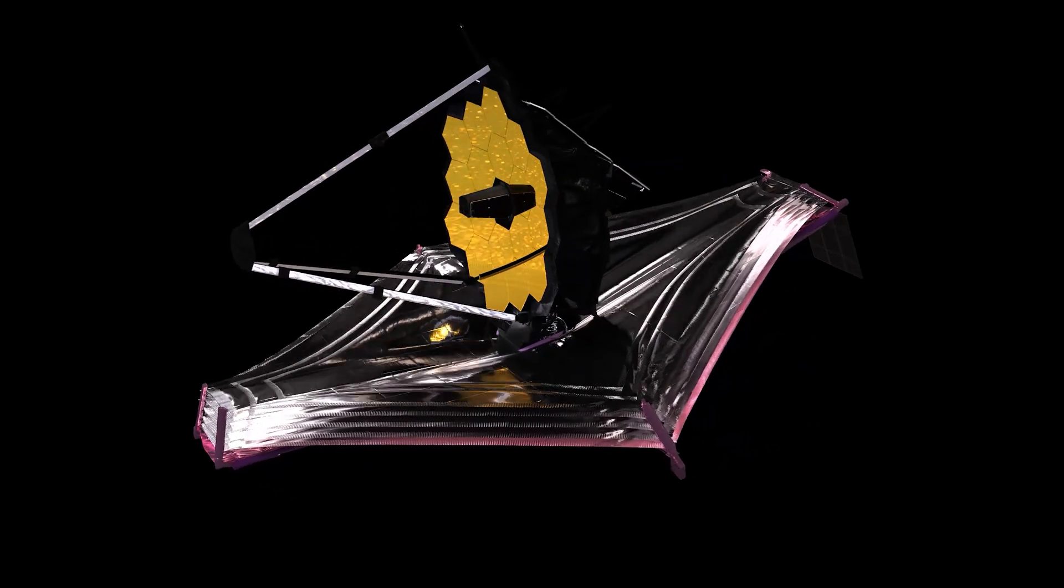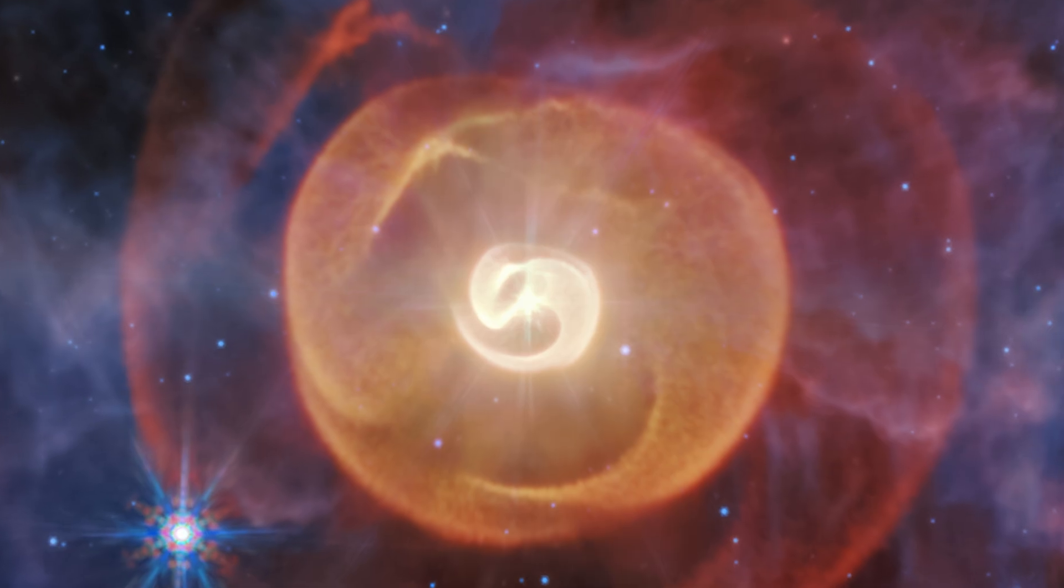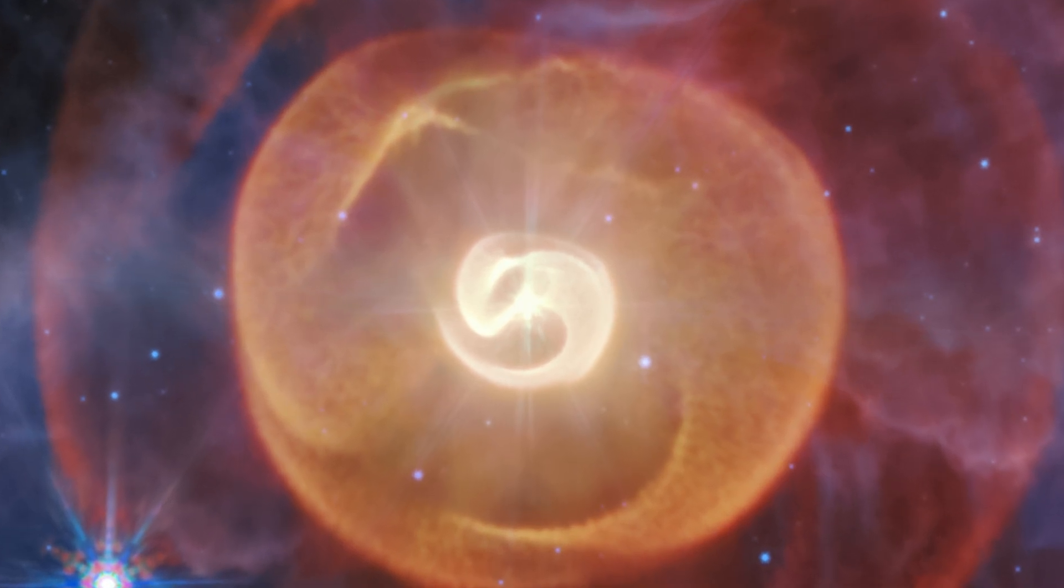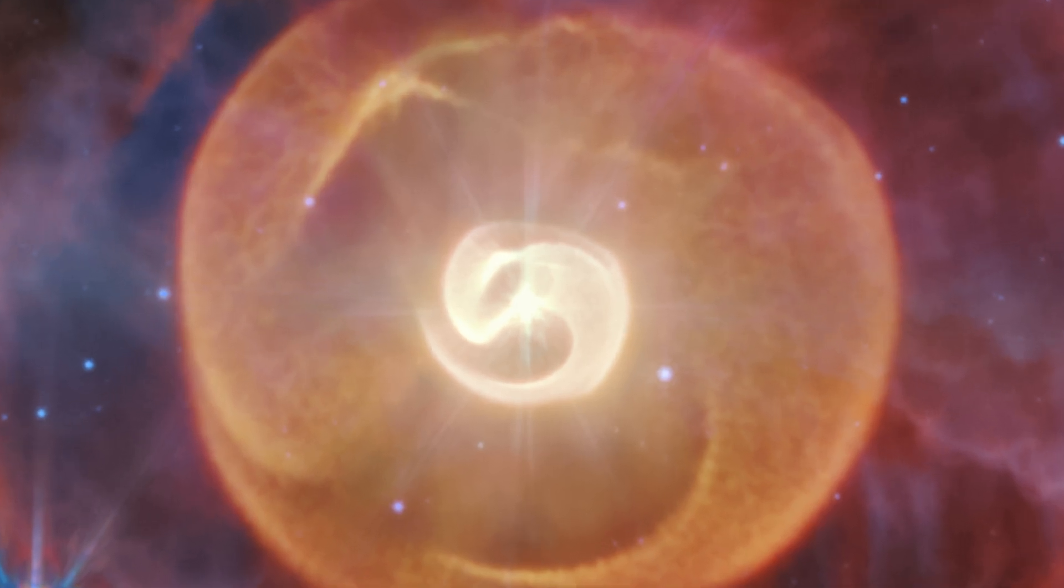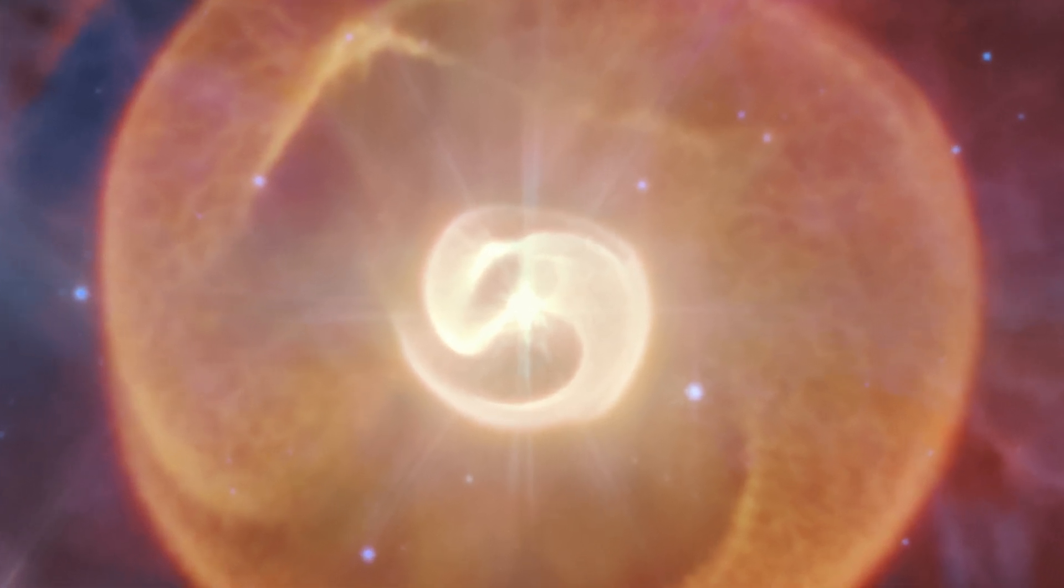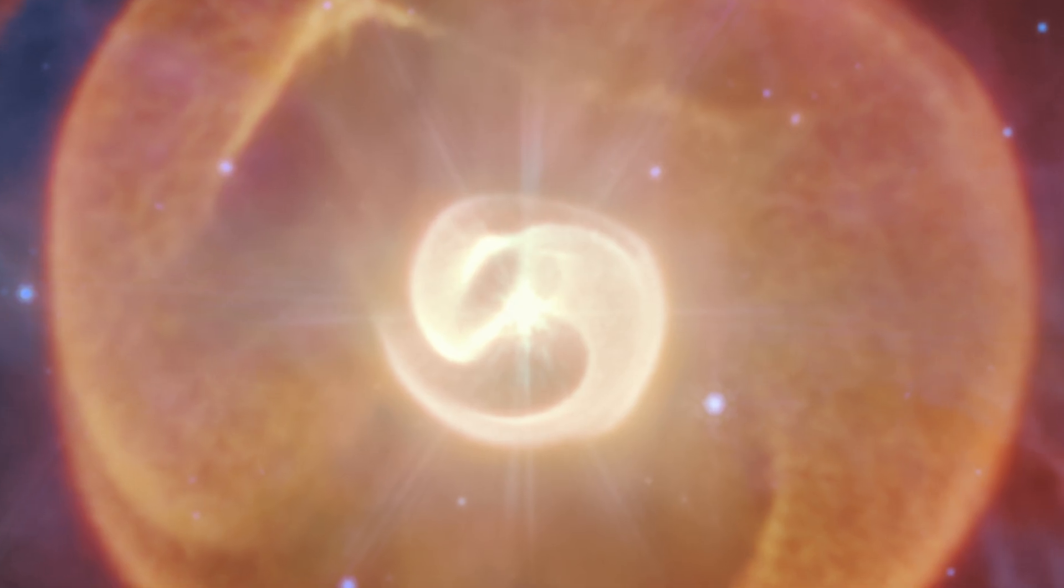Something else amazing that JWST helped confirm is that there is actually a third star in the center of the object too. So while I've been talking about two stars orbiting each other, with their strong stellar winds mixing and colliding for a quarter of a century at a time, producing these dusty shells.